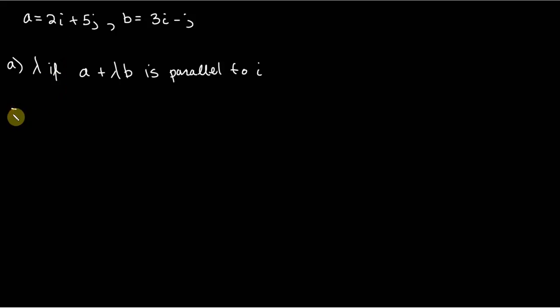So first, my first inclination would be just to write this out. So we know we have A plus lambda B, so let's just write that. So we've got 2i, that's A, 2i plus 5j. And I won't skip any steps just to make everything very explicit. Plus lambda B. So we can say plus lambda times, and what's B? B is 3i minus j.